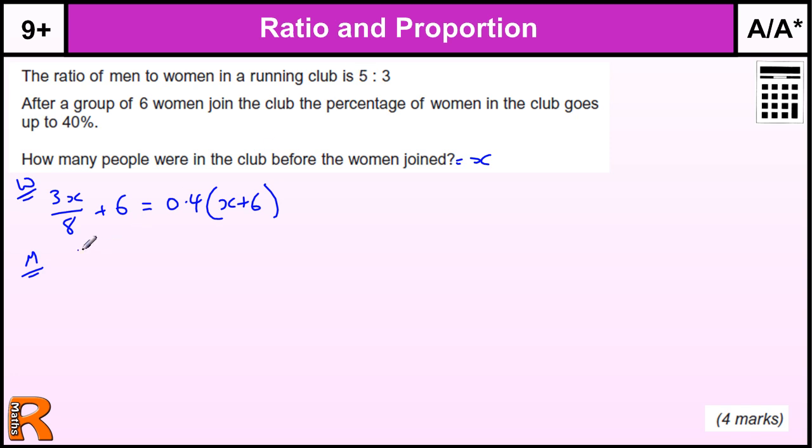So if we look at the men, we have 5/8ths of the original club are men. Now the men aren't increasing, they're staying the same, but they become now 60% of the club. But the club has increased to X plus 6. So 5/8ths of the original club members were men, and now it's 60% of the new club total, which is X plus 6.